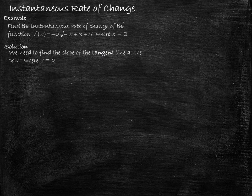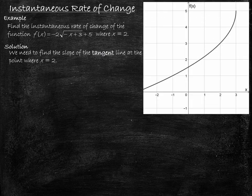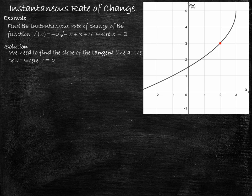Here's the graph of our function f(x) = −2√(−x + 3) + 5. If we look up from an x value of 2, we see a corresponding point on the graph with a y value of 3. This is the point at which we are going to find the instantaneous rate of change — it's the point at which we need to find a slope. You might wonder: don't we need two points to find a slope? And furthermore, this graph is curved — how do you find the slope of a graph if it's not a straight line?